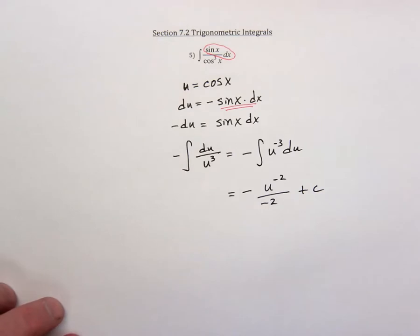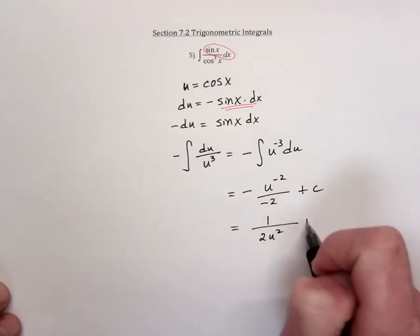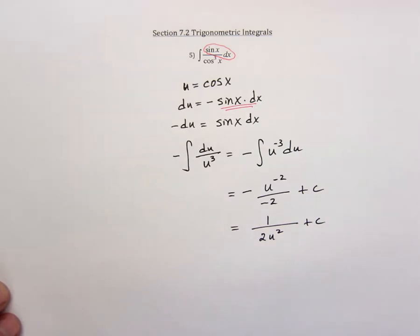And now that we've integrated, plus the constant of integration. Next, we need to get rid of the two negatives, they cancel. We can also rewrite this as 1 over 2u squared. You shouldn't leave any negative exponents.